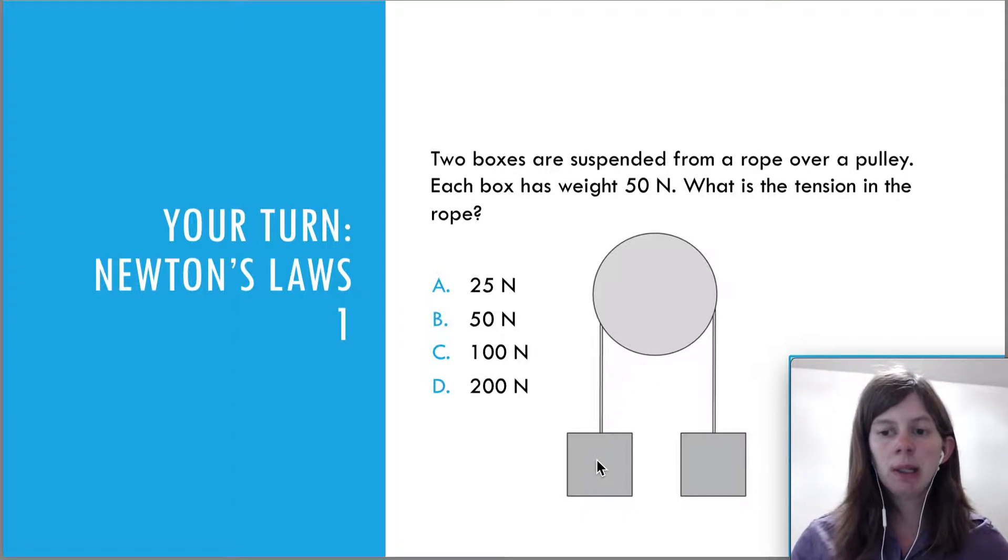When it's in equilibrium, you can draw a free body diagram for one of these boxes. There's going to be tension pointing away and weight going straight down. If it's in equilibrium, the forces must balance. That means tension must equal that weight. So the tension over here must also be equal to that weight, also 50. Remember, one string, one tension. The tension throughout the rope is going to be 50 Newtons.